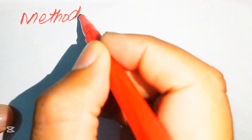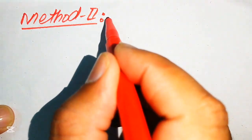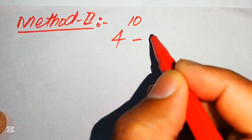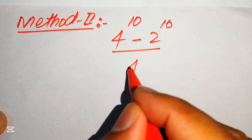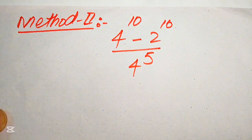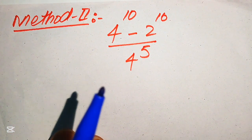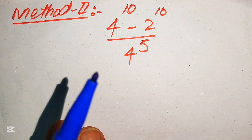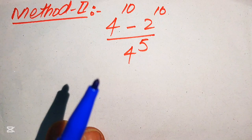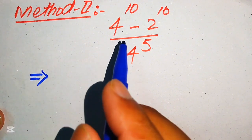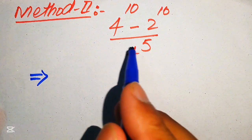In Method 2, we copy down the given expression: 4^10 minus 2^10, divided by 4^5. We will simplify this without a calculator using a different approach. In this method, we split the fraction and write each term of the numerator separately over 4^5.